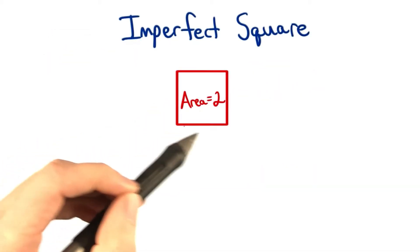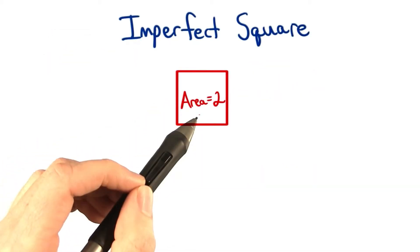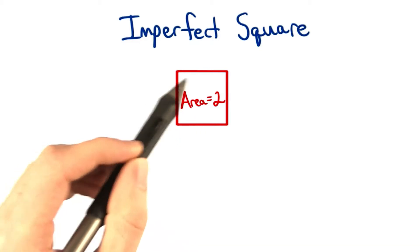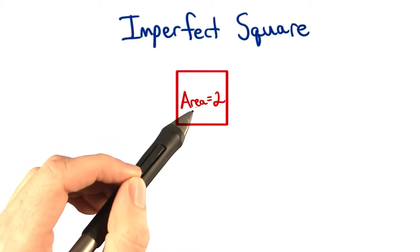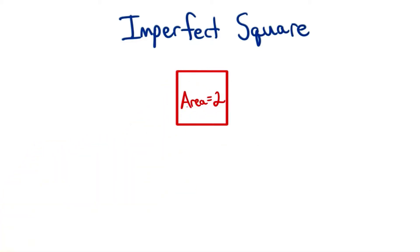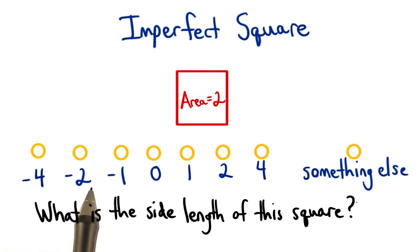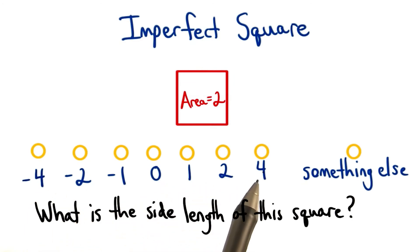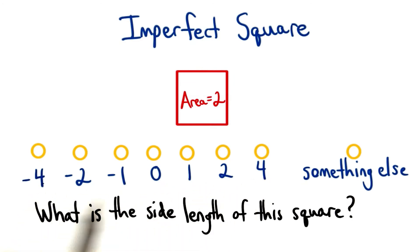What about this square? If this square had an area of 2 units squared, what do we think that the side length of the square would be? Choose one of these answers for the side length. Is it one of these numbers, or is it something else?